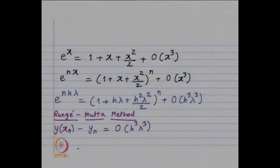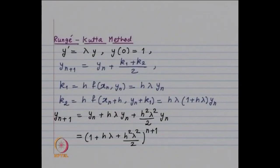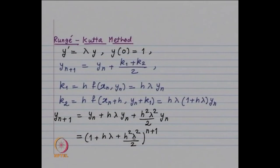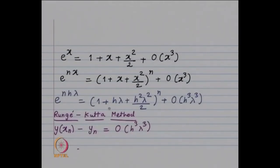In the Runge-Kutta method of order 2, the local discretization error is of order h³. For RK2, y_n = (1 + hλ + h²λ²/2)^n, and comparing with e^(nhλ) shows that y(x_n) − y_n is of order h³λ³, giving truncation error of order h³ as expected.